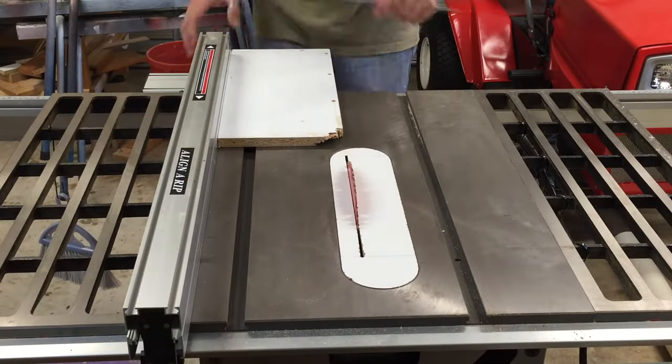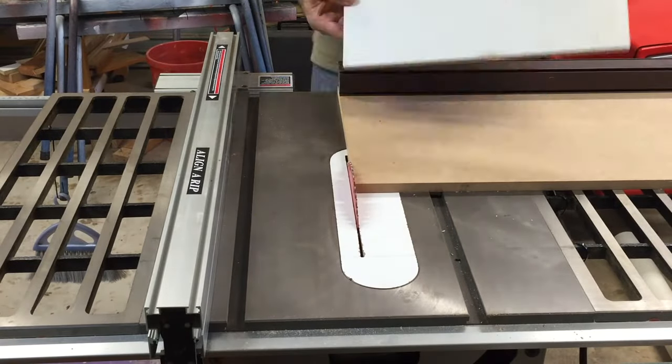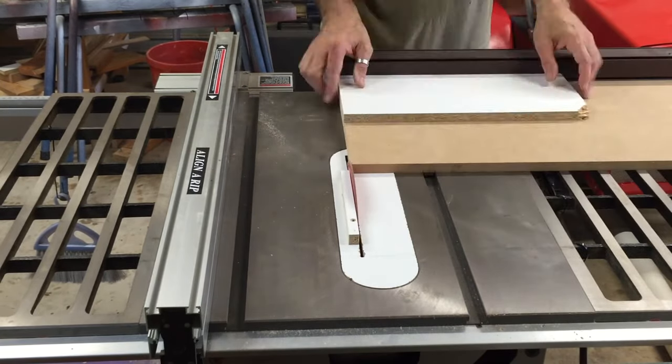I started off by trimming down some 16mm melamine scrap, into two pieces that were 180mm square.